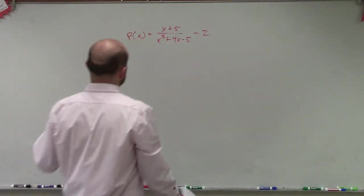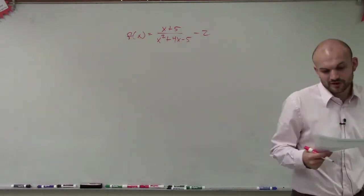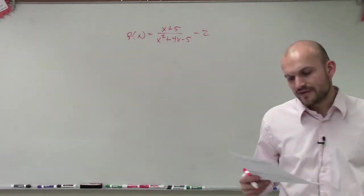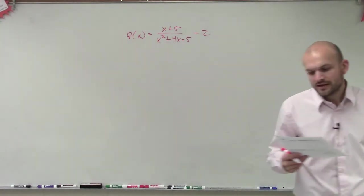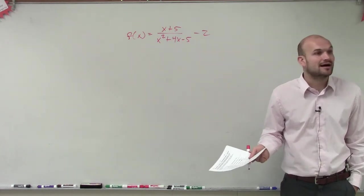Alright, so what they're asking for this problem is they say fill in the information below for the rational function. If that information is not applicable, then sketch a graph and its asymptote. So we need to sketch this graph.